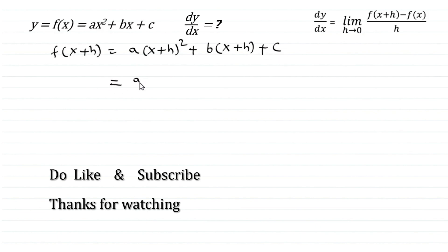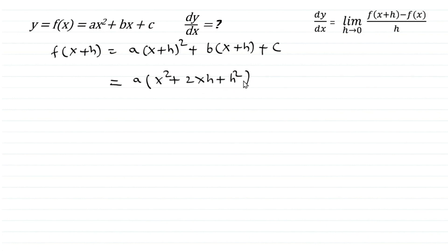Expanding using binomial formula this becomes a times (x² plus 2xh plus h²). Distributing we get ax² plus 2axh plus ah² and from the second term bx plus bh plus c.